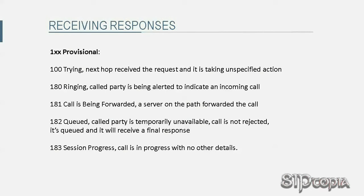1xx provisional responses are also called informational responses. They basically indicate that the entity that received the request is taking some action that will take longer than 200 milliseconds, and the final response is not ready yet. This keeps the UAC from resending the request.